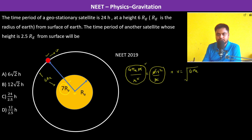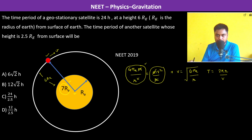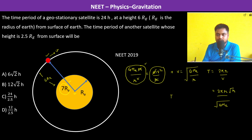Since velocity is that, the time period equals 2πr divided by v. 2πr is the entire circumference of the orbit. So this equals 2πr divided by √(GMe/r), which gives r to the power 3/2. Therefore the time period is proportional to r^(3/2).